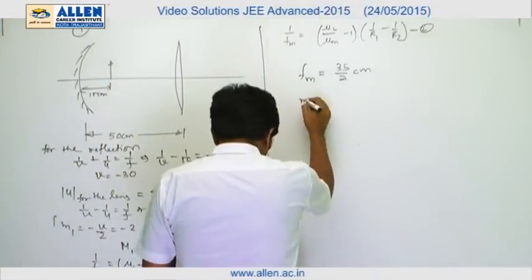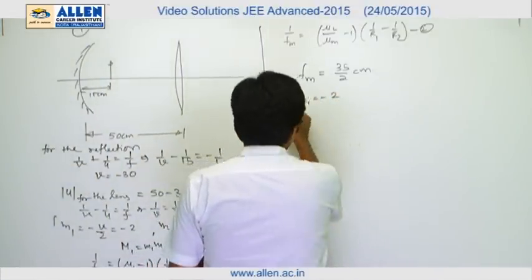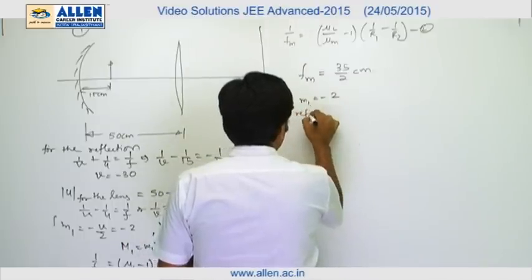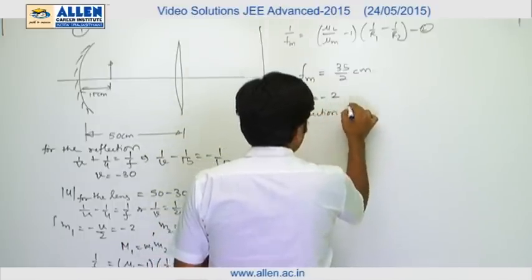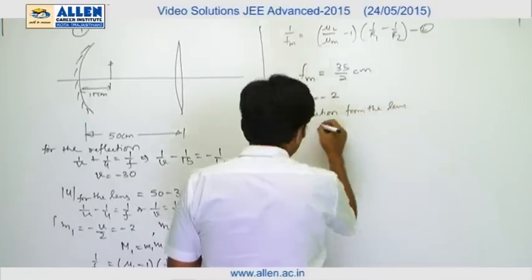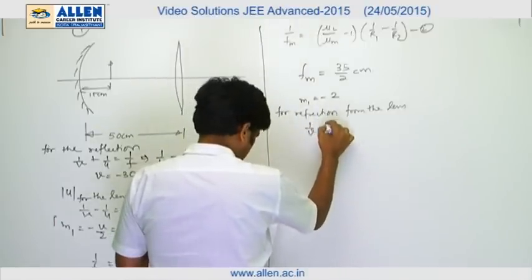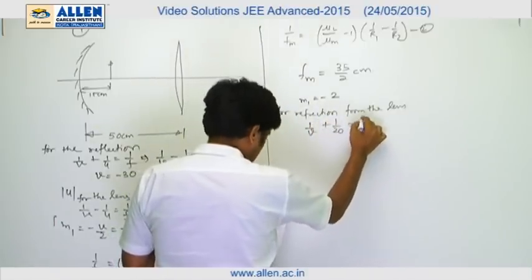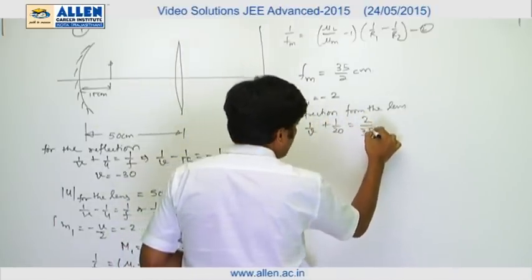That means again in this case, m1 will be given by the same value, that is minus 2. But for refraction magnification from the lens, we will apply 1 by v plus 1 by 20 equals to 2 by 35. From here we get v equals to 140.